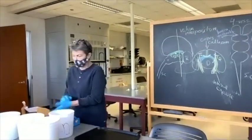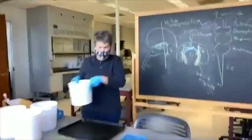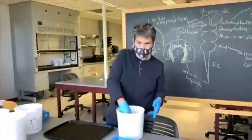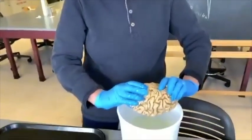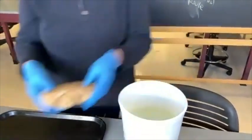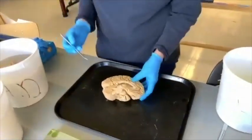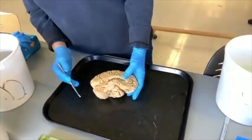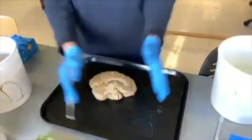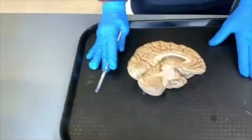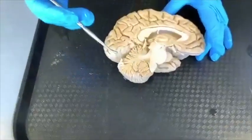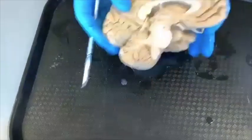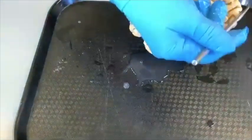What we'll do now is start with a human midsagittal section. Here is the brain — this is the front, this is the back, and this is actually the left hemisphere. The right hemisphere has been removed, so we're looking at the left hemisphere.